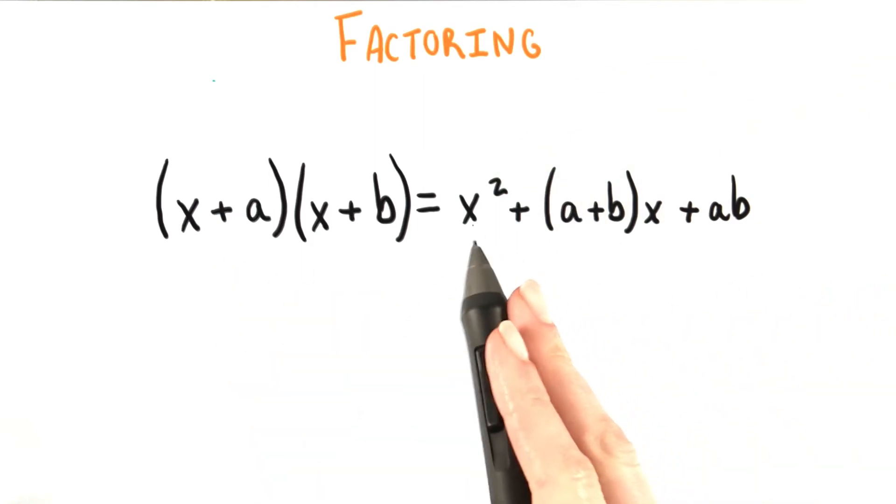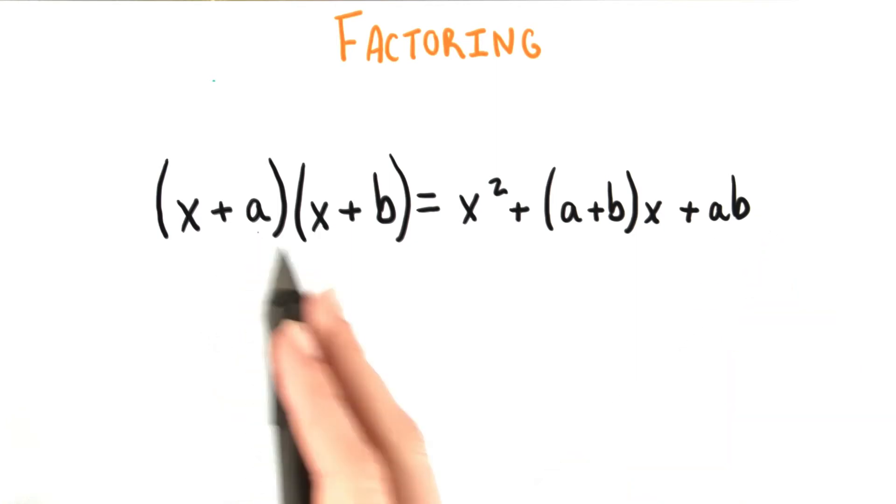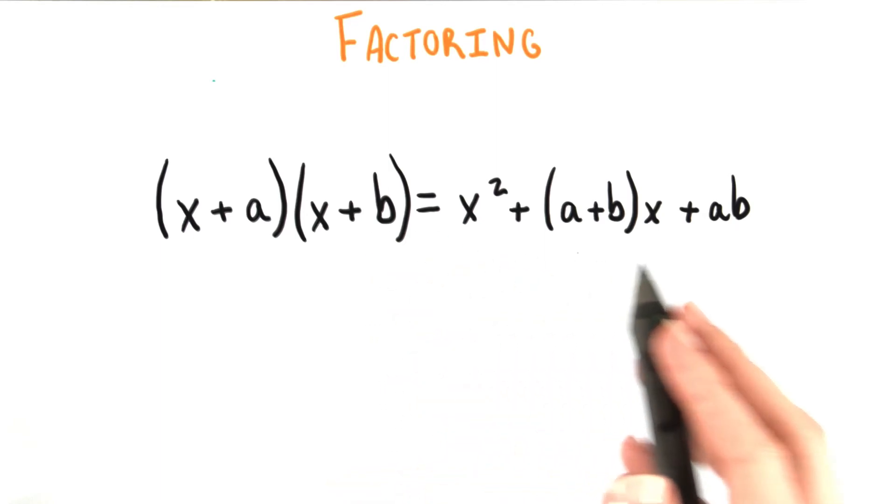Okay, so multiplying this out we get x² + (a + b)x + ab. What if instead of a and b we want to play with real numbers? But maybe in playing with those real numbers, I want to keep the equation for the quadratic in this form.